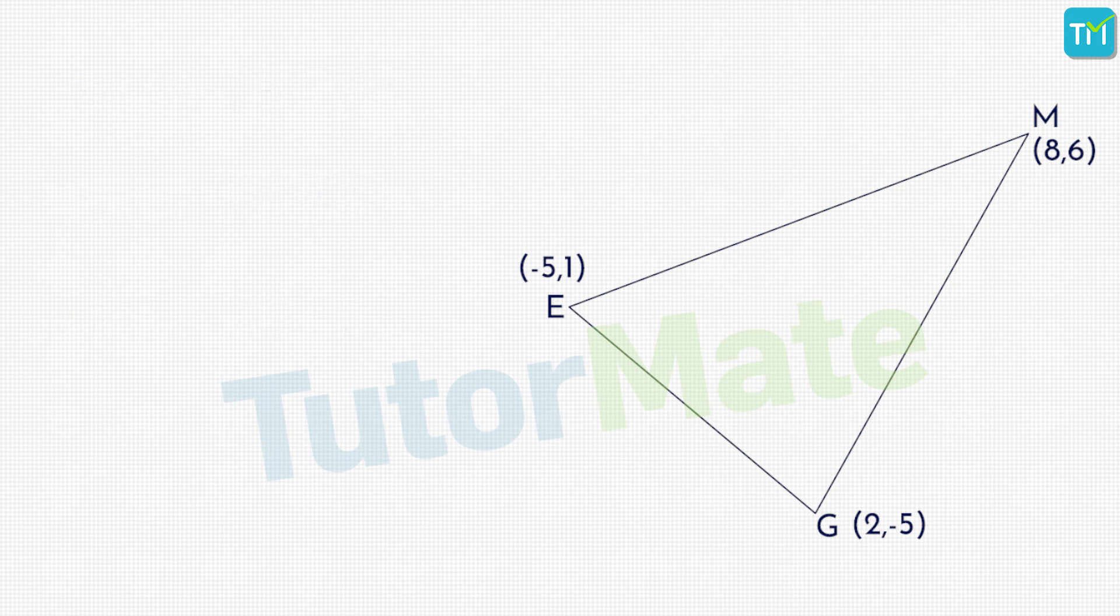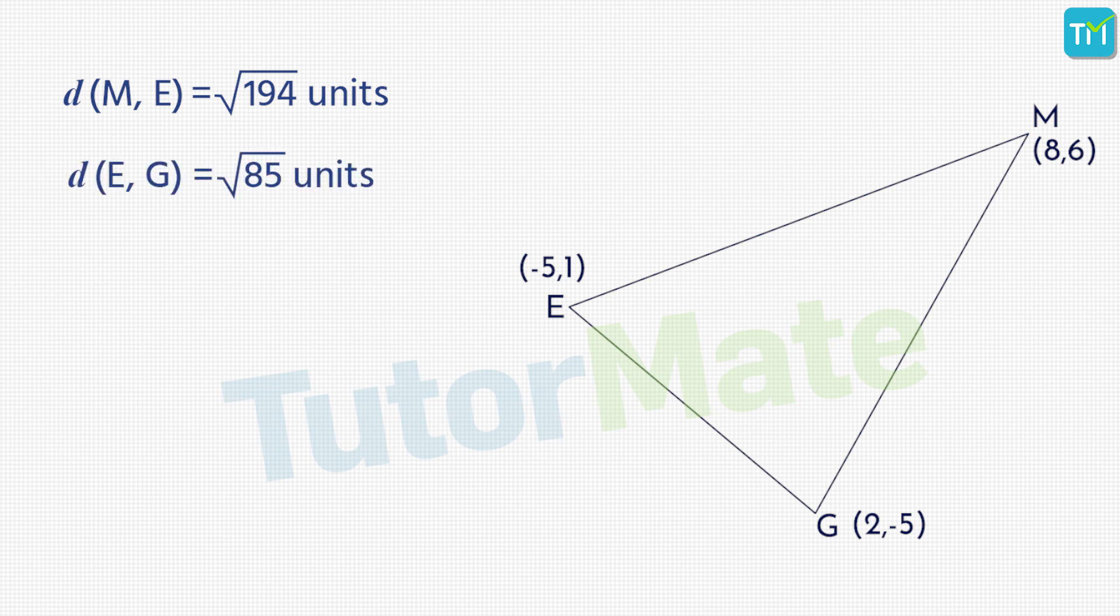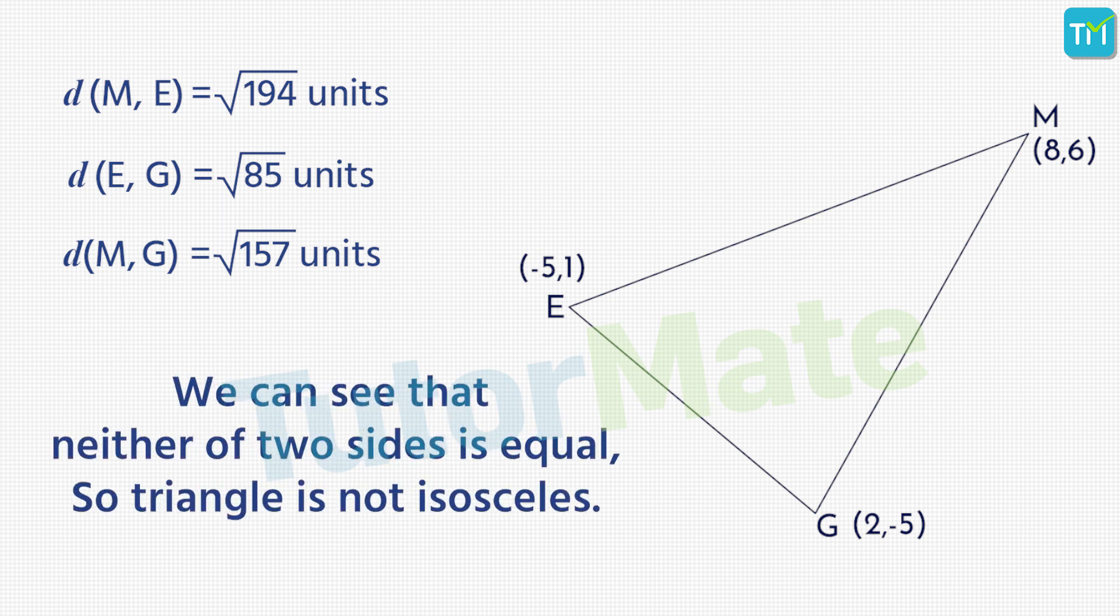So let us list out all the distances that we have calculated. We got ME = √194 units, EG = √85 units, while MG = √157 units. Do you see any two sides having equal lengths? Well, I do not. So as we can see here that neither of the two sides are equal, we can conclude that the triangle is not isosceles. That was a good problem, wasn't it?